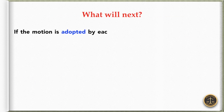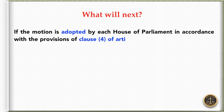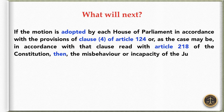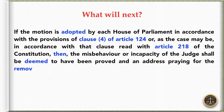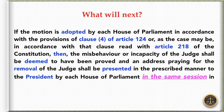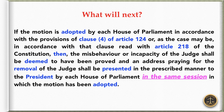If the motion is adopted by each House of Parliament in accordance with the provisions of Clause 4 of Article 124, or, as the case may be, in accordance with that clause read with Article 218 of the Constitution, then the misbehavior or incapacity of the judge shall be deemed to have been proved, and an address praying for the removal of the judge shall be presented in the prescribed manner to the President by each House of Parliament in the same session in which the motion has been adopted.